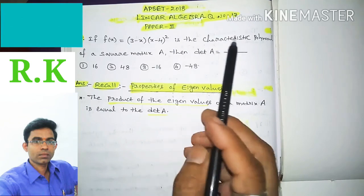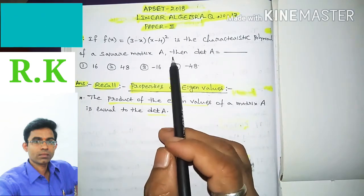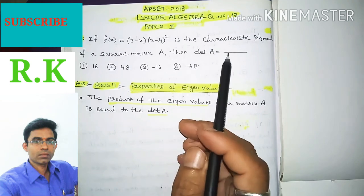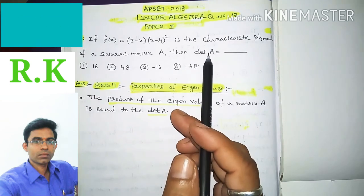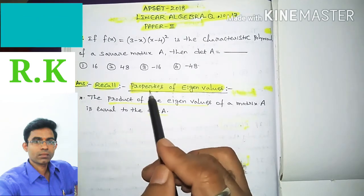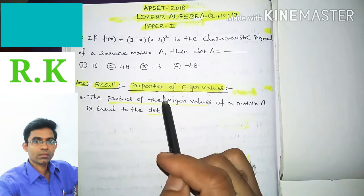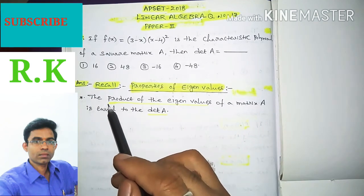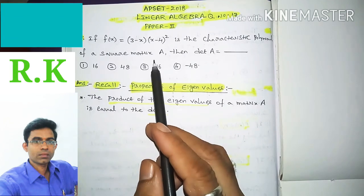Here the question is about characteristic values, so we will use the properties of characteristic values, that is, properties of eigenvalues. First, we recall the properties of eigenvalue.